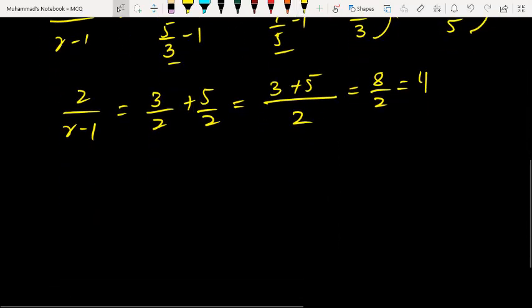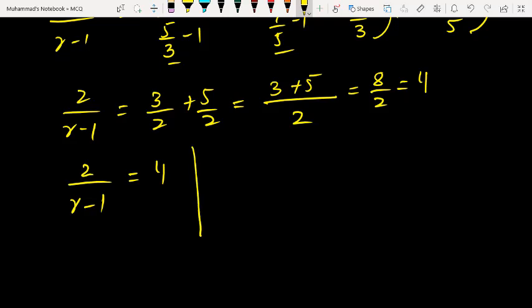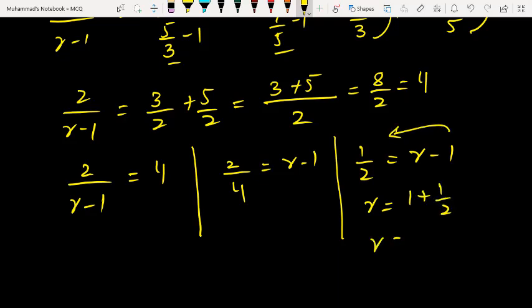So now the answer will be 2 over gamma minus 1 equals 4. This answer, 2 by 4 equals gamma minus 1. This will be 1 by 2 equals gamma minus 1, and gamma here, we will add 1, plus 1 by 2. Gamma equals 3 by 2, and final answer will be 1.5.